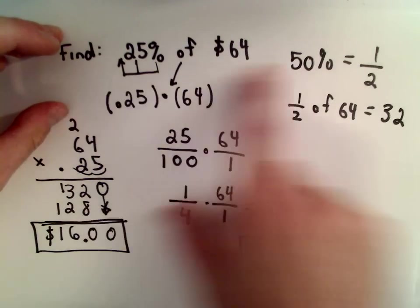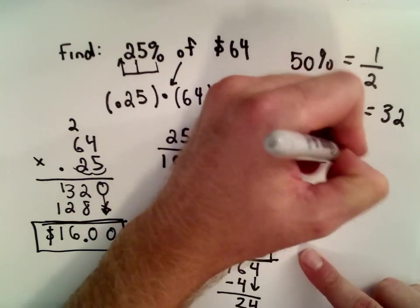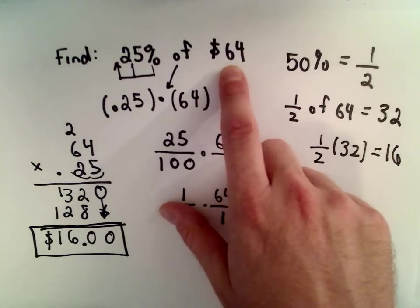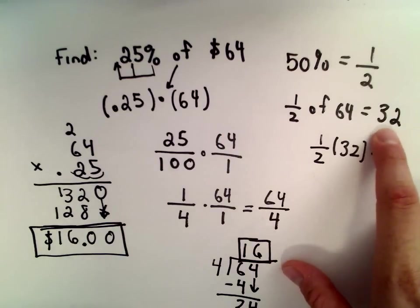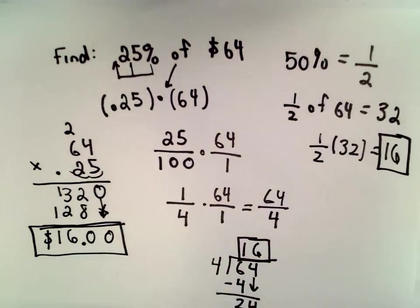Well, 25% is going to be another half. So, if we take another half of 32, we'll get 16. So, that's another way to do it. You're basically taking half of the original amount. So, half of 64 is 32. If you take another half of that, you'll get 16, which is another way to get it.